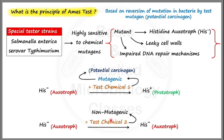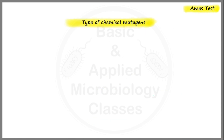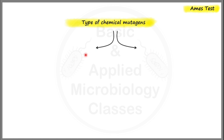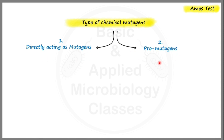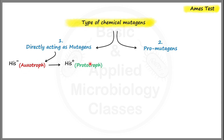Now let's cover the two types of chemical mutagens, which is very important for understanding the Ames test. The first type is directly acting mutagens. When we treat the histidine auxotrophic Salmonella strain with chemicals that directly act as mutagens, we observe that the histidine auxotroph gets converted into a histidine prototroph.